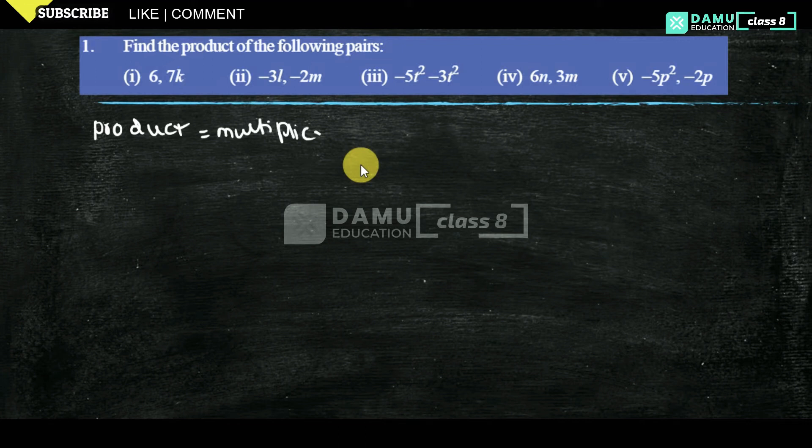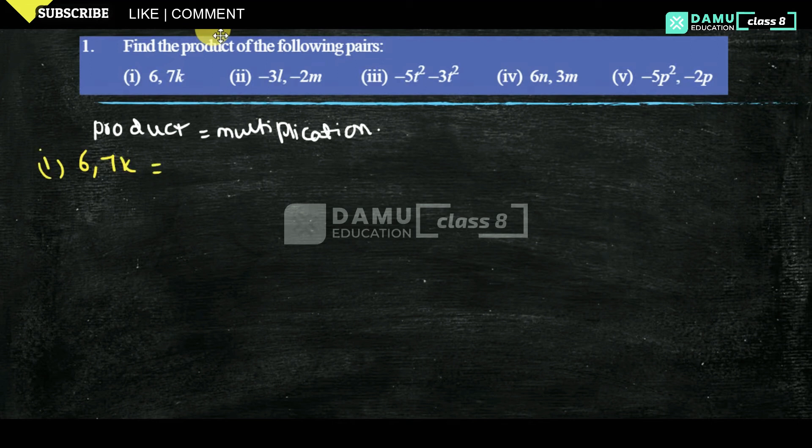We have to find the product of both the terms. So here what is that is 6 and 7k. Our first one is 6 and 7k. That will be 6 into 7k.